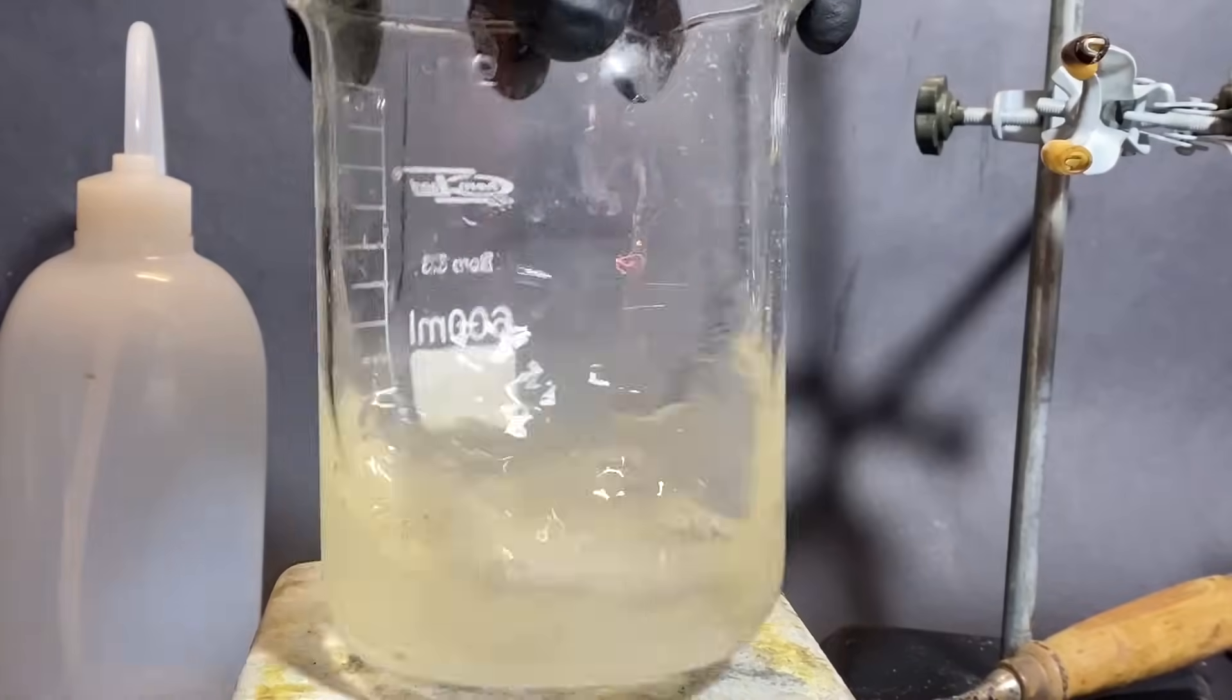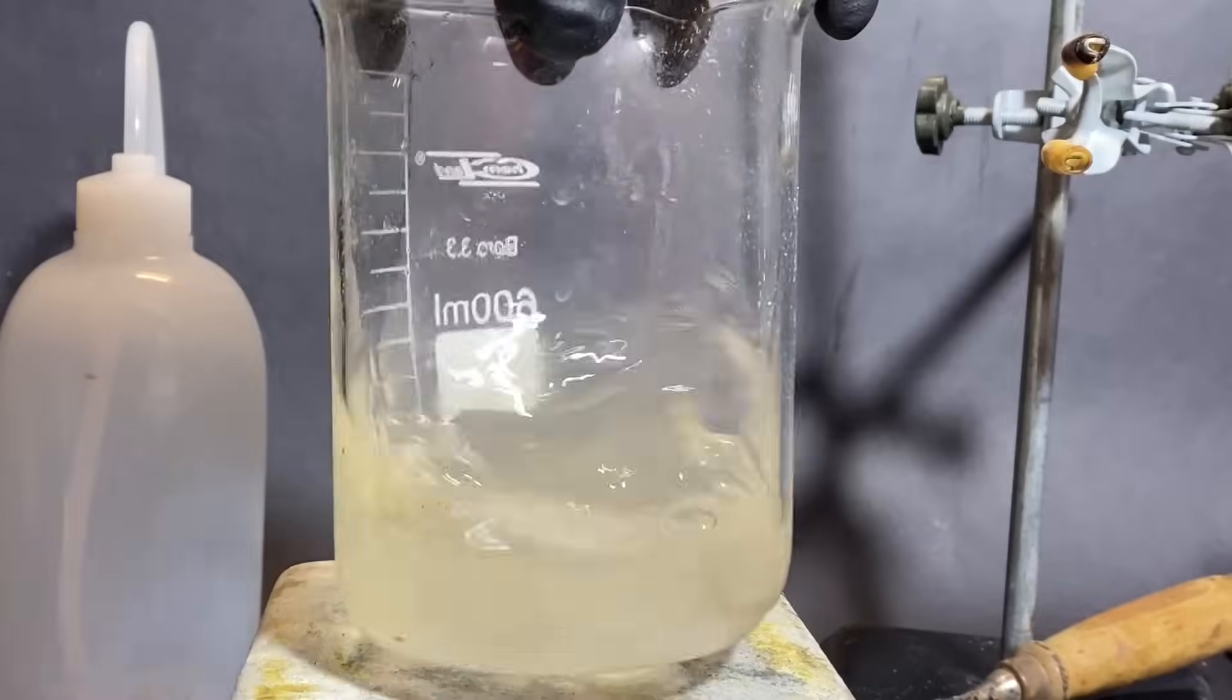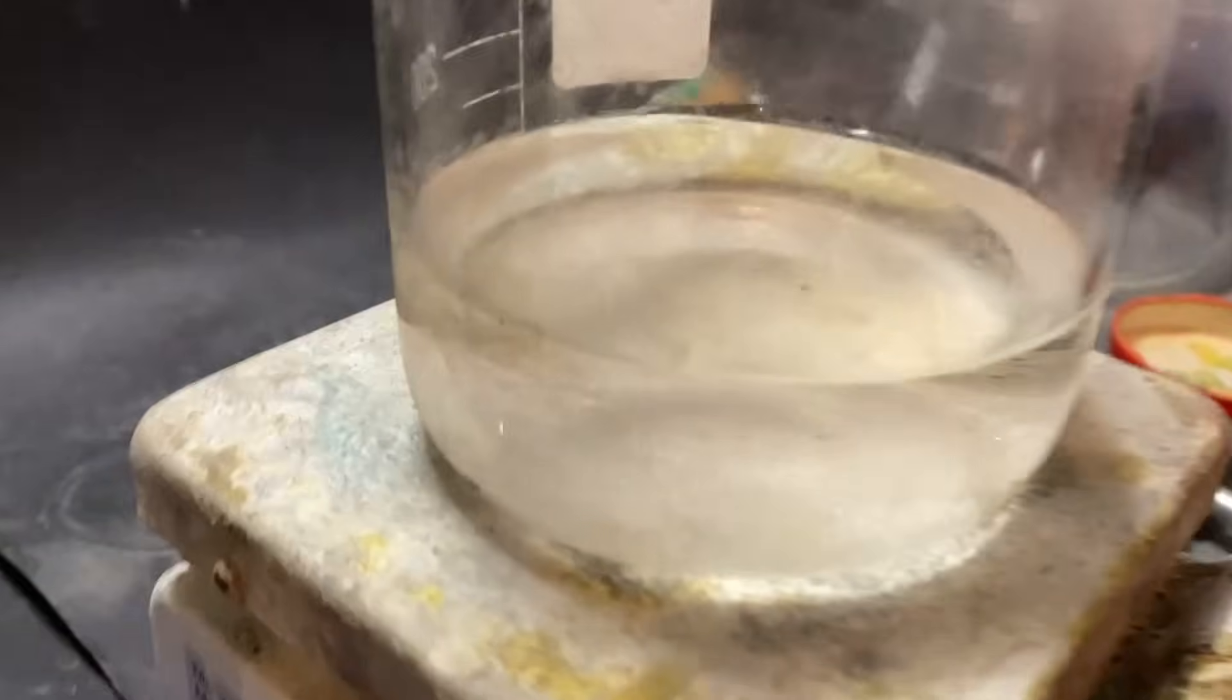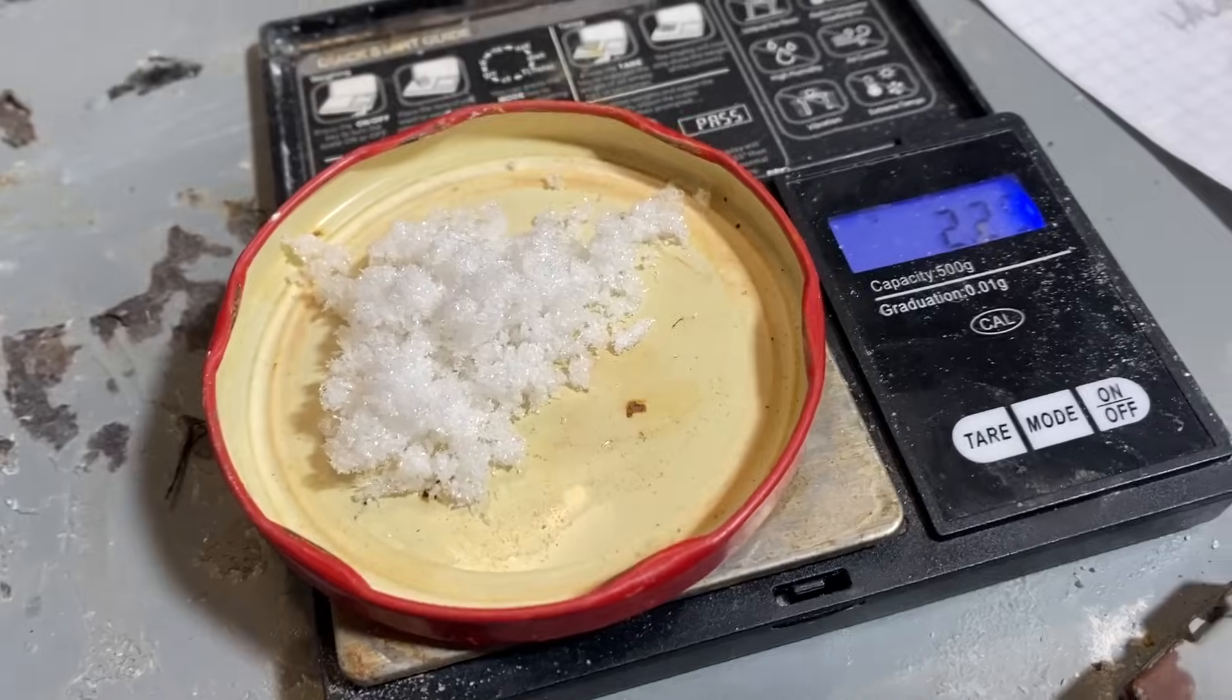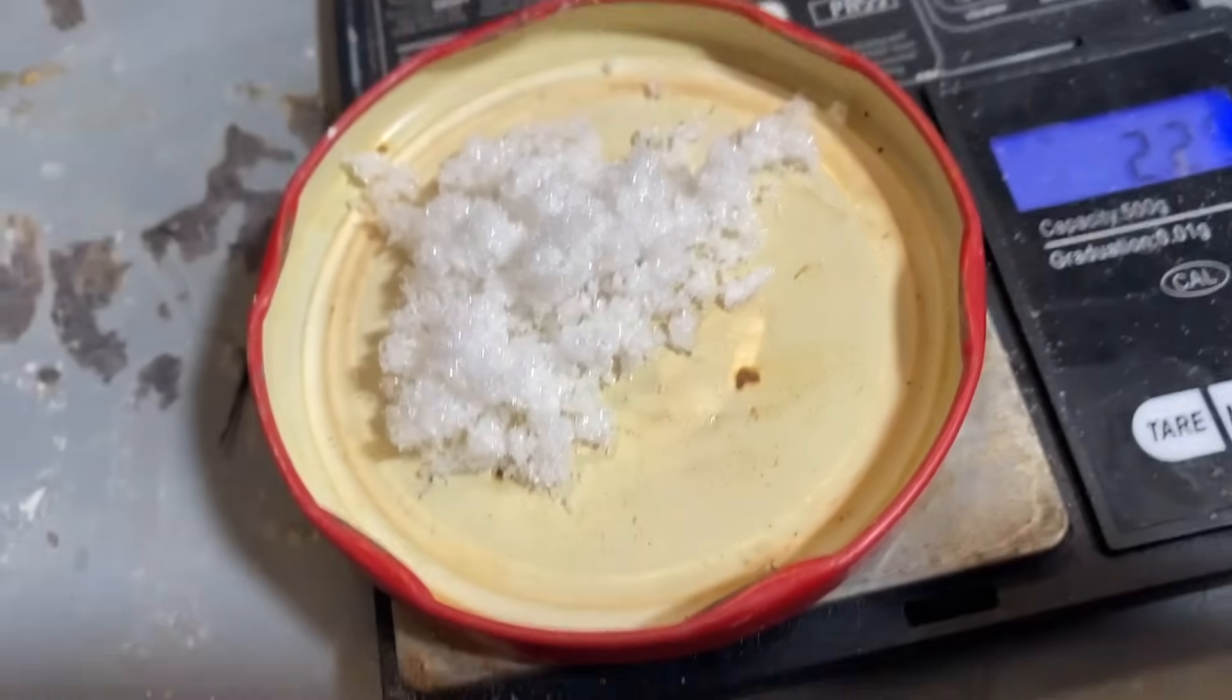After the addition, the solution had this yellowish tint, which meant that we were on a good track. I left it overnight for aminoguanidine bicarb crystals to appear, and once they did, they looked really freaking cool.